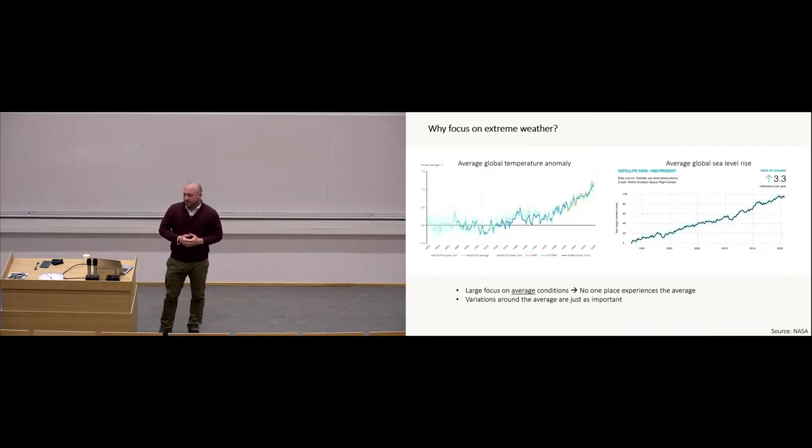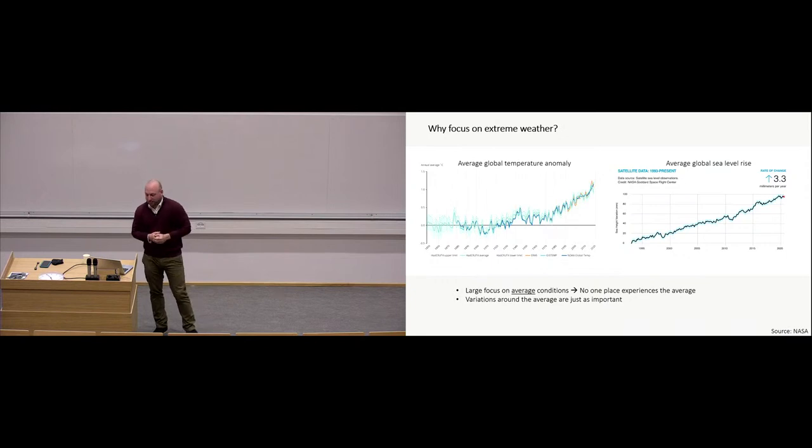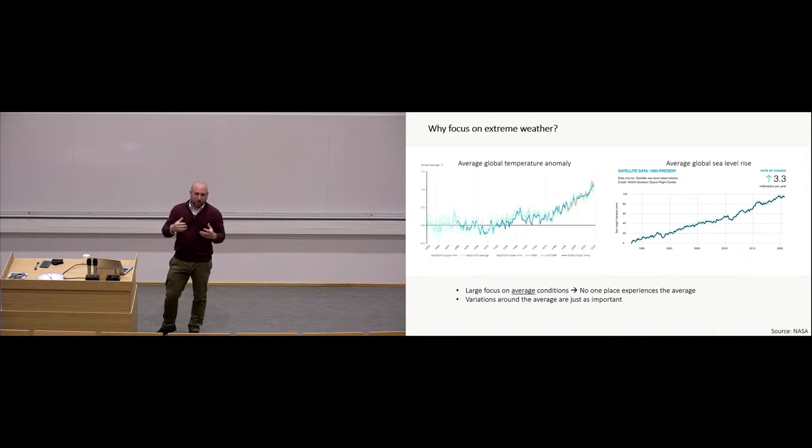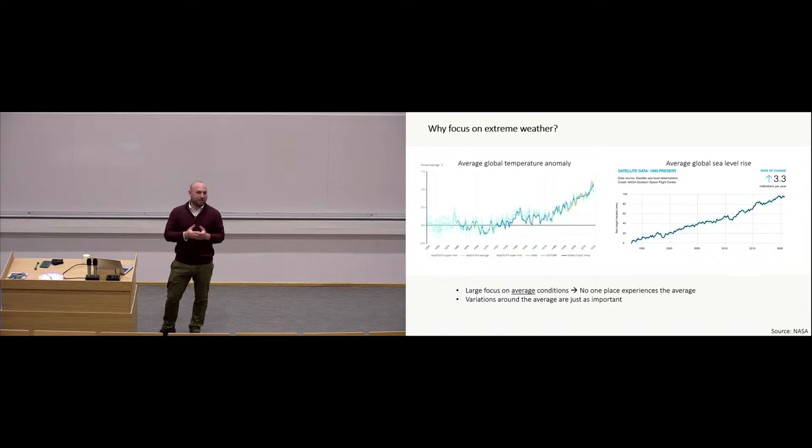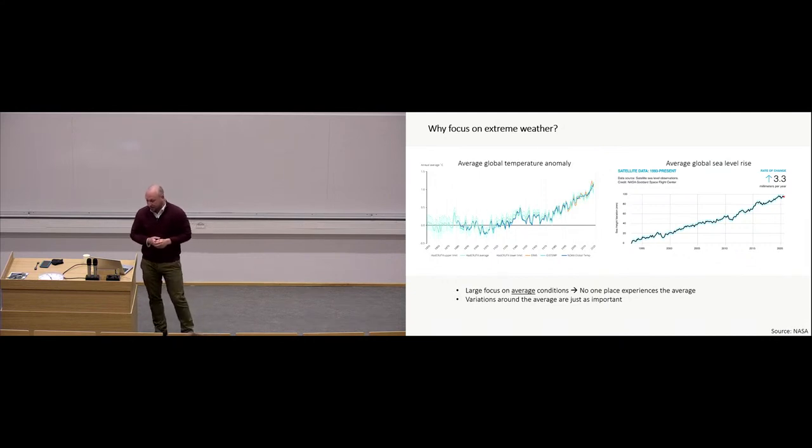So a lot of the debate on climate change focuses on averages. We often hear about average global temperature anomalies or average global sea level rise. And I think this is a useful framework for defining overall changes happening on the planet. However, no one place experiences its average, right? That's the definition of an average. And the variations around that average are what many people argue are what is actually important for how ecosystems and societies function.